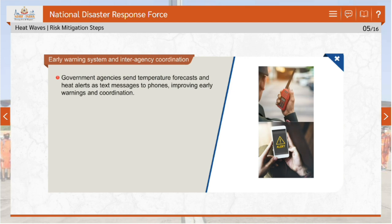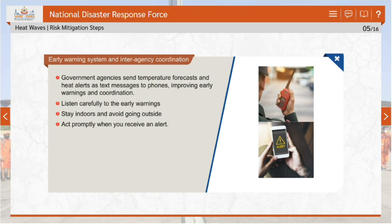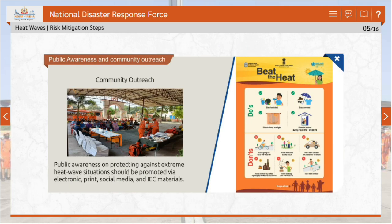Government agencies send temperature forecasts and heat alerts as text messages to phones, improving early warnings and coordination. Listen carefully to the early warnings, stay indoors and avoid going outside, and act promptly when you receive an alert. Raising public awareness messages on how to protect against extreme heat wave situations must be done through electronic, print, social media and IEC materials.